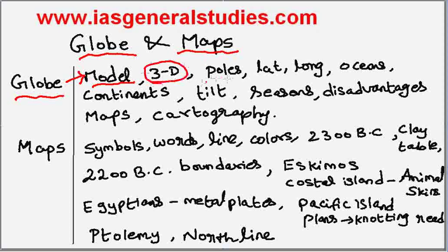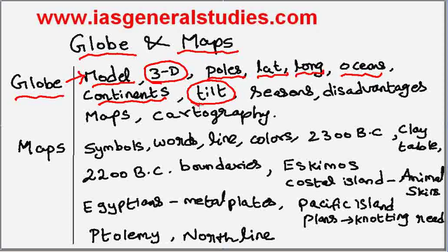The globe shows both the poles, latitude, longitude, ocean, and continents. The globe is also tilted about its north-south axis, just like the earth, and because of this tilt the seasons are caused.